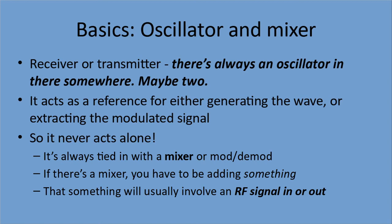Getting harder: we have oscillators and mixers. In a receiver or transmitter, there's always an oscillator in there somewhere — maybe even two of them. It acts as a reference for either generating the radio wave or for extracting the modulated signal. It never acts alone — it's always tied in with a mixer to mix together the oscillator and whatever we're modulating or demodulating. Whenever you see 'mixer' in a question, you have to be adding something. Sometimes you can gamble that it'll be an oscillator, but sometimes your answers might have two different types of oscillators. Go to the study guide and really study it if you want to ace this section. The mixer will usually involve an RF signal going in or out.